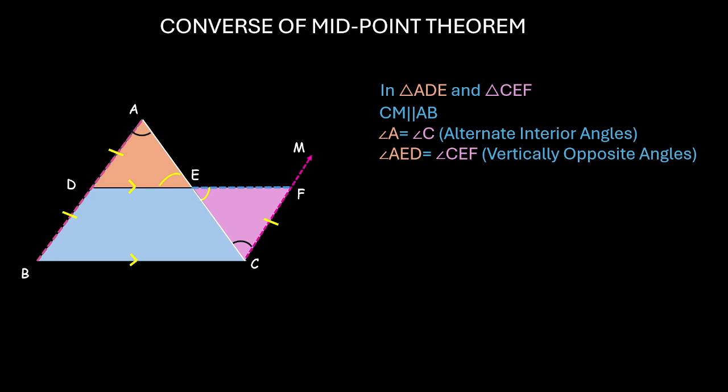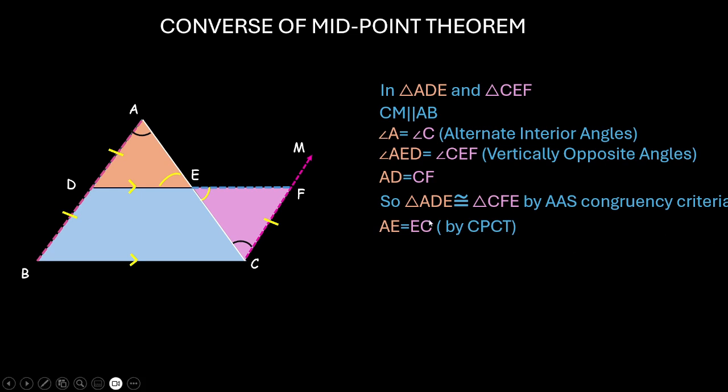And, AD is already equal to CF. We just proved it, right? So, these two triangles are congruent by AAS criteria. Yeah, angle, angle, side. So, by that, we can just say that AE is equal to CE by CPCT. AE is equal to CE by corresponding parts of congruent triangles. That means, E is the midpoint of AC.